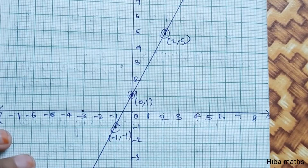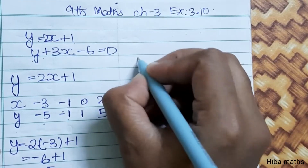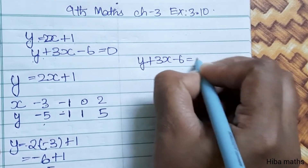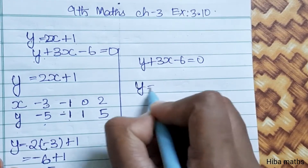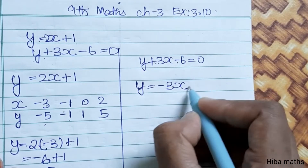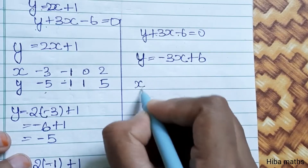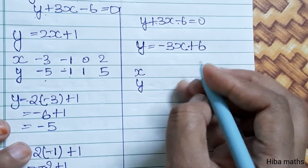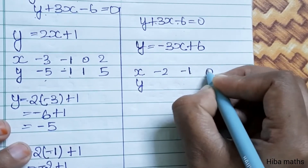Now for Line 2. The equation is y plus 3x minus 6 is equal to 0. Rearranging, y is equal to minus 3x plus 6. Let's take x values: minus 2, minus 1, 0, and 2 to find the corresponding y values.